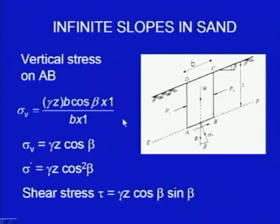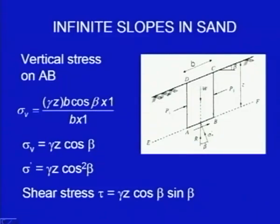Now let us move to the next part of this chapter: infinite slopes. First I am taking infinite slopes in sand. Sand is a granular material with cohesion C dash equal to zero. This is an infinite slope, like a hill slope, extending to a very large distance theoretically. We consider a plane of rupture at a certain depth, where a hard stratum may be available.